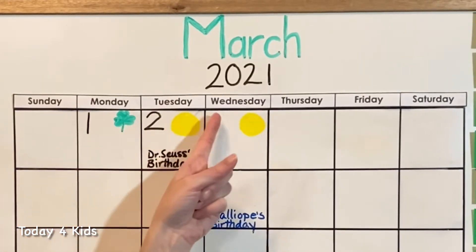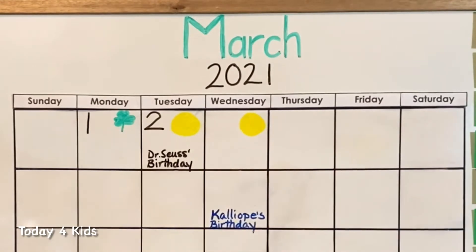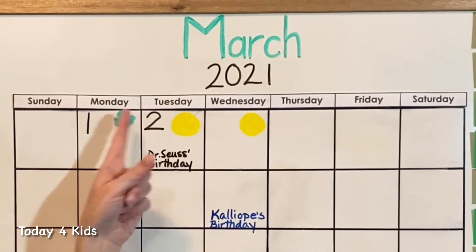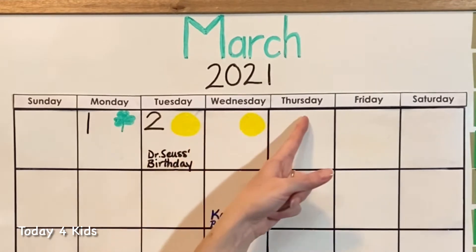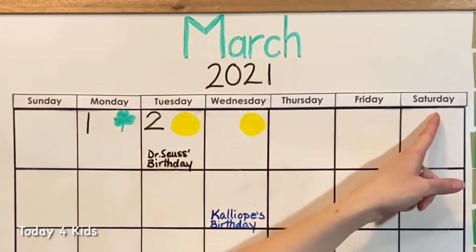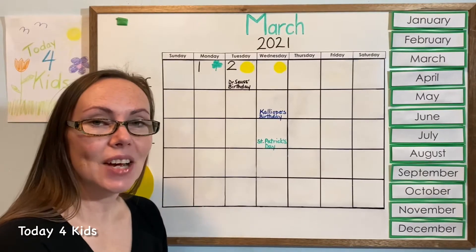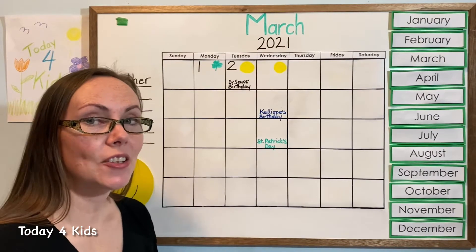One, two, three, four, five, six, seven. There are seven days in the week. Sunday, Monday, Tuesday, Wednesday, Thursday, Friday, Saturday. Thank you for singing that with me. It's much more fun when we do it together.